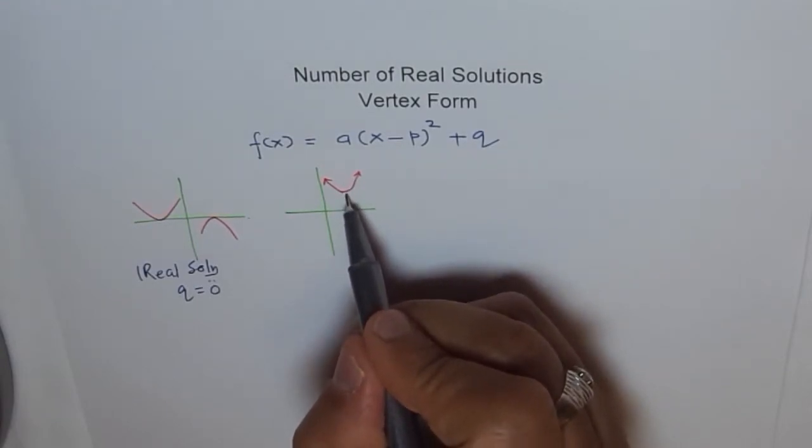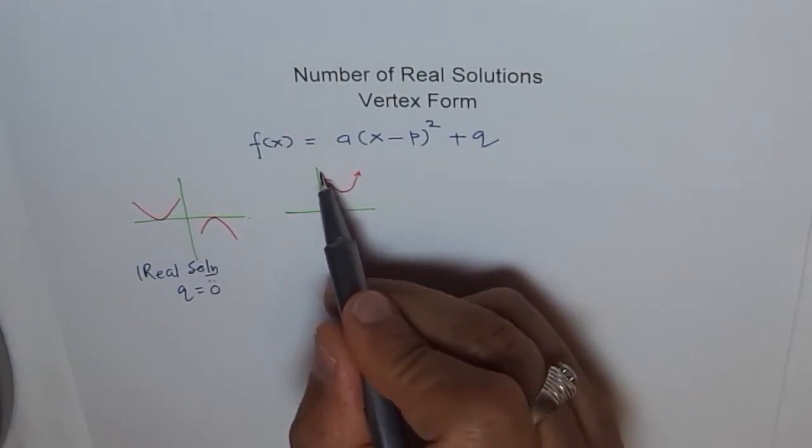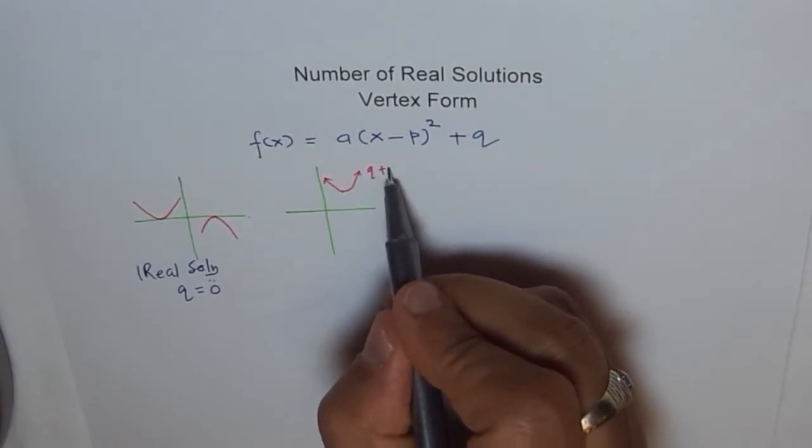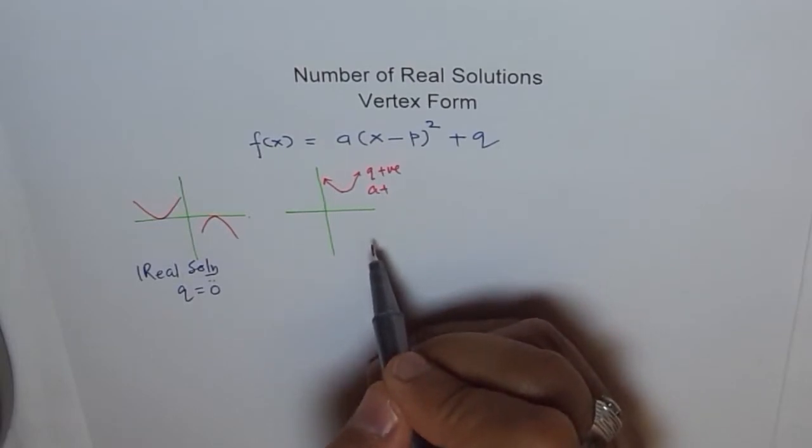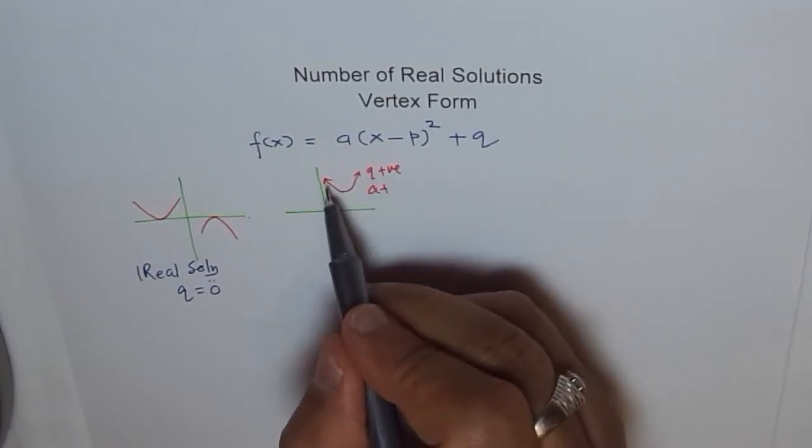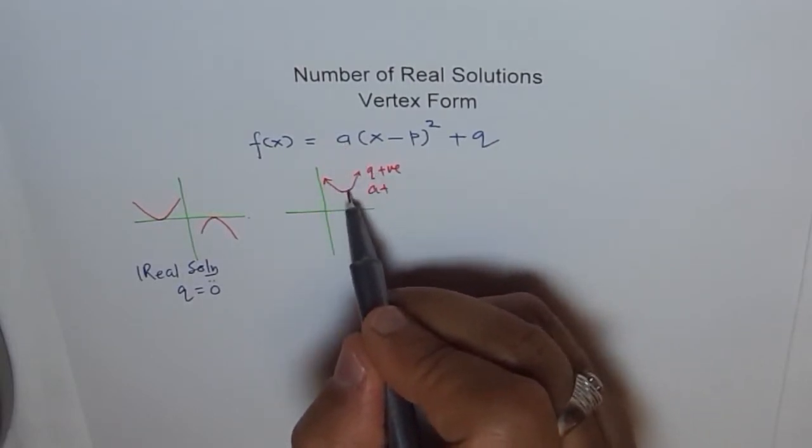Vertex here and parabola opens upwards means q is positive and a is also positive. If a is positive, it will open up and q is positive, q is up.